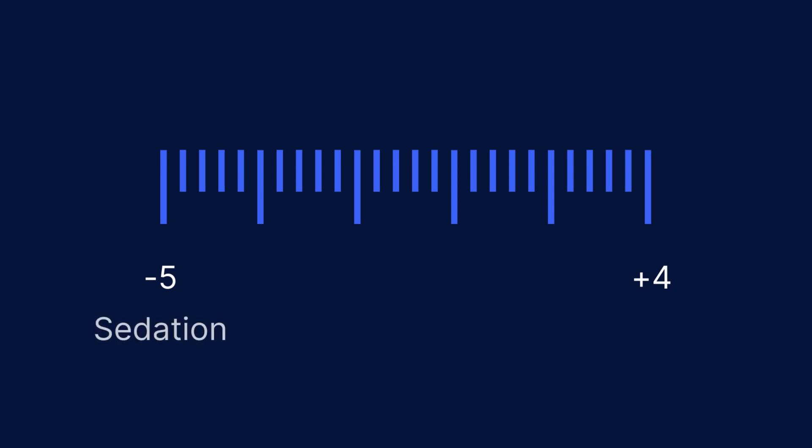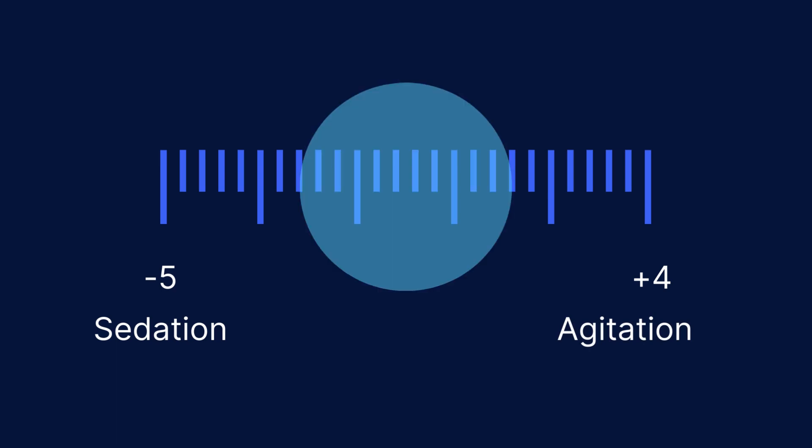The RAS scale is scored between negative 5 to positive 4. The negative values are for measuring sedation, while the positive values are for rating agitation. What healthcare professionals need to aim for when using the scale is to get to the point where the patient will score between negative 2 to positive 1, which means they are properly sedated, though this will depend on the sedation protocols for the kind of illness or injury they are treating.